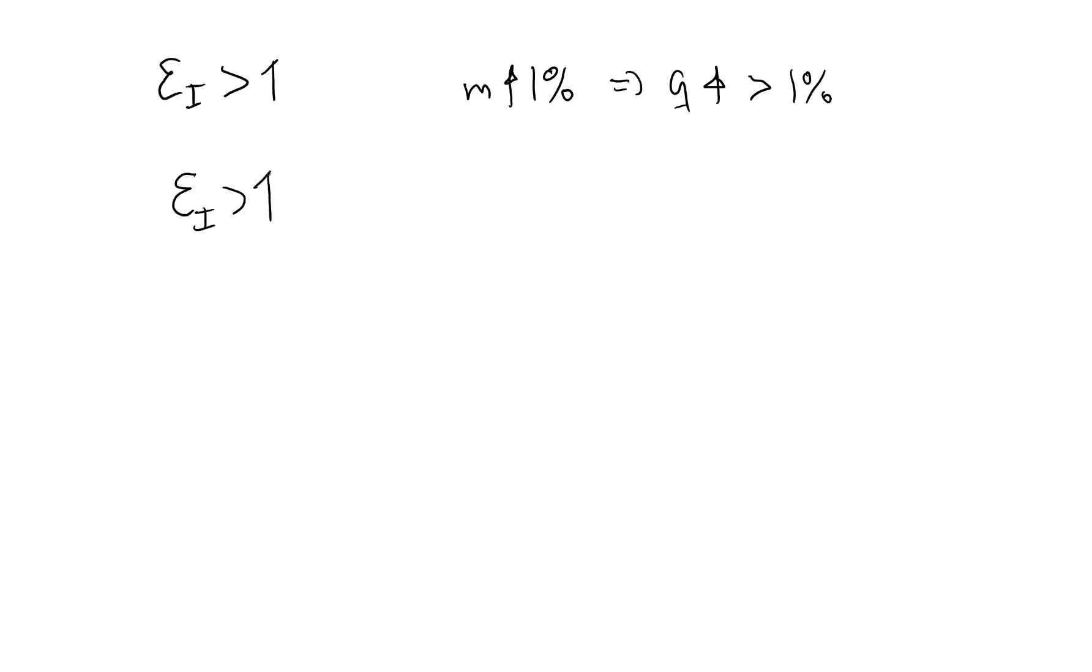So what I want to do is I want to show you that epsilon i is greater than or equal to 1, if and only if the proportion spent on good 1, which is p times q over m, is increasing in m. Which is the same thing as saying that when I do the derivative of pq over m, this must be strictly positive. Keep in mind that in this example, p is kept fixed. We are only changing m and considering how q depends on m.